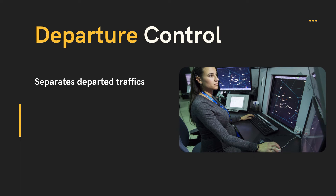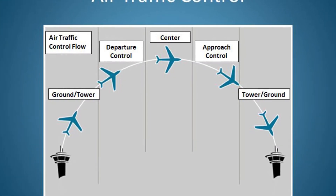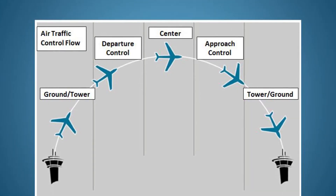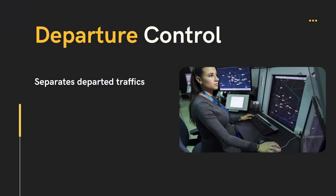Another unit is departure control. If the airport has a radar facility, it may have a departure controller. Departure controllers are generally responsible for aircrafts which have departed from the runway until a certain altitude. These units are located generally at crowded airports because these kinds of airports have very heavy air traffic.